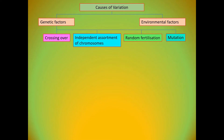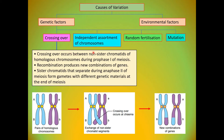Genetic factor number one: crossing over. Crossing over occurs between non-sister chromatids of homologous chromosomes during prophase 1 of meiosis. This diagram shows a pair of homologous chromosomes. Crossing over occurs at the chiasma, where exchange of non-sister chromatid segments occurs, producing a new combination of genes. Sister chromatids that separate during anaphase 2 of meiosis form gametes with different genetic material at the end of meiosis.